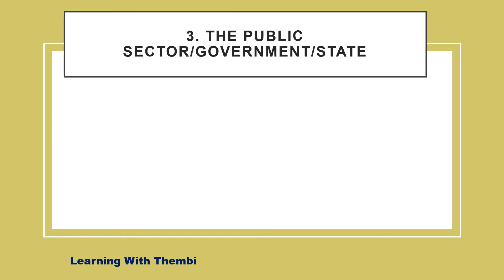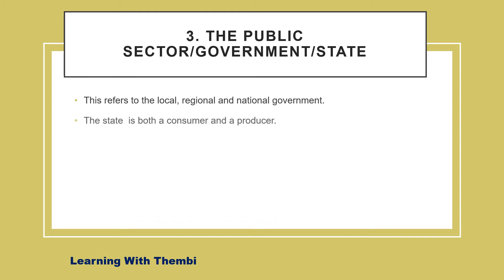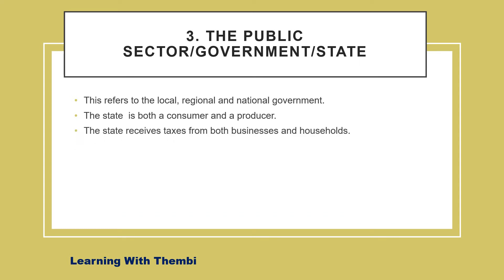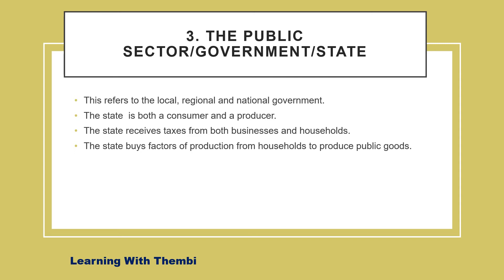The third participant is the public sector, also known as the government or the state, referring to the local, regional, and national government. The government plays both the role of a consumer and a producer. It receives taxes from both businesses and households, and with that revenue it produces public goods. When the government buys factors of production from households it is acting as a consumer, and when it produces public goods for households and businesses it is acting as a producer.